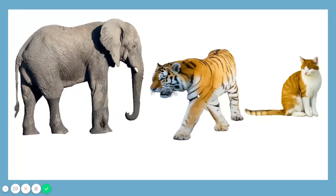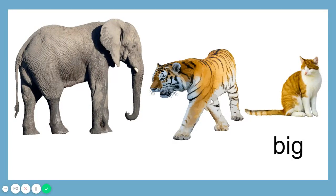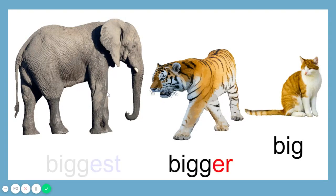Next, I have here three animals. I have here an elephant, a tiger, and a cat. Which do you think is big? The cat is big, and the tiger is bigger, and the elephant is the biggest. Good job!